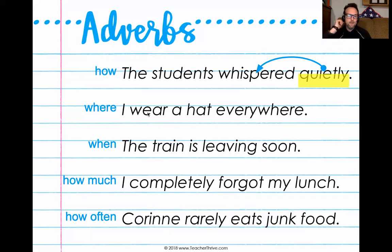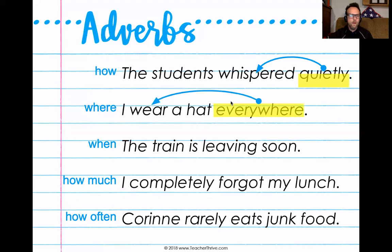Adverbs can tell you where. I like this example because it uses two homophones: W-H-E-R-E, which tells direction, and W-E-A-R, which is a verb — something that you do. The example sentence is: 'I wear a hat everywhere.' The adverb here is 'everywhere,' because it's telling a location. What am I doing in that location? I am wearing a hat. So 'wear' is my simple predicate, and 'everywhere' tells where the wearing happens.